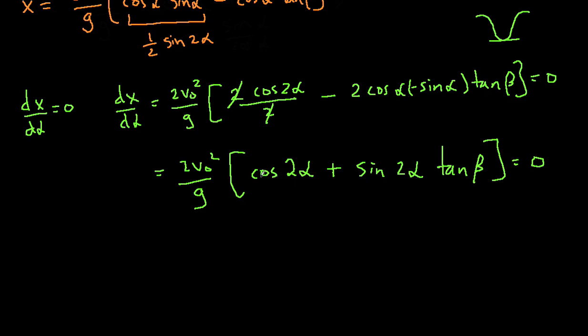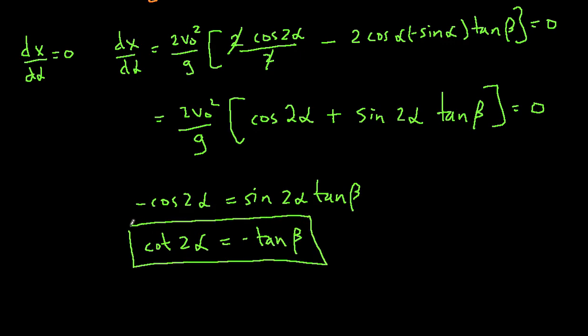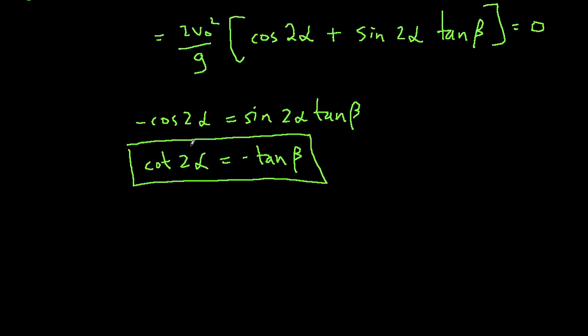So when this part of the equation equals zero, we've actually optimized for alpha. So to do that, we get minus cosine 2 alpha equals sine 2 alpha times tangent of beta. So cotangent of 2 alpha, I've divided each side by sine 2 alpha, equals minus the tangent of beta. So this gives us an equation from which we can, given a beta, we can determine what's the optimum alpha.